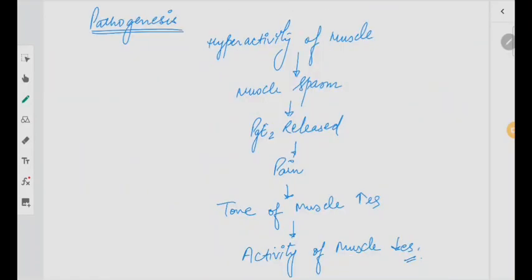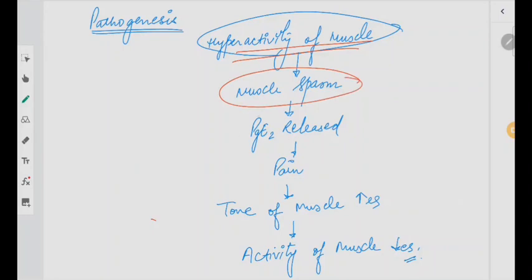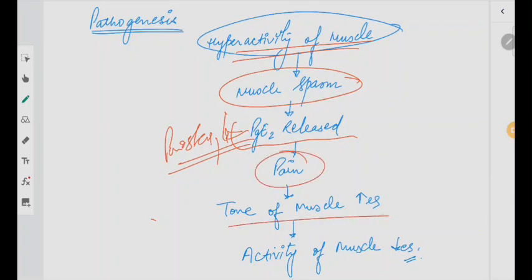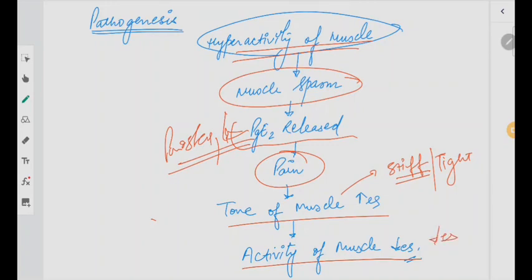Moving ahead, what is the pathogenesis? Hyperactivity of the muscle happens first, which leads to muscle spasm. It releases PGE2 — prostaglandin E2 — which leads to pain. Then the tone of the muscle increases, the muscles become stiff and tight. As their tone increases, the activity of the muscles gets decreased. This is a simple pathogenesis.